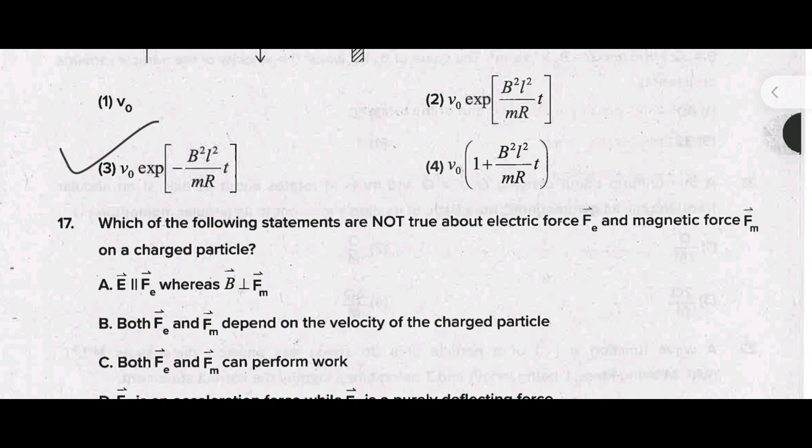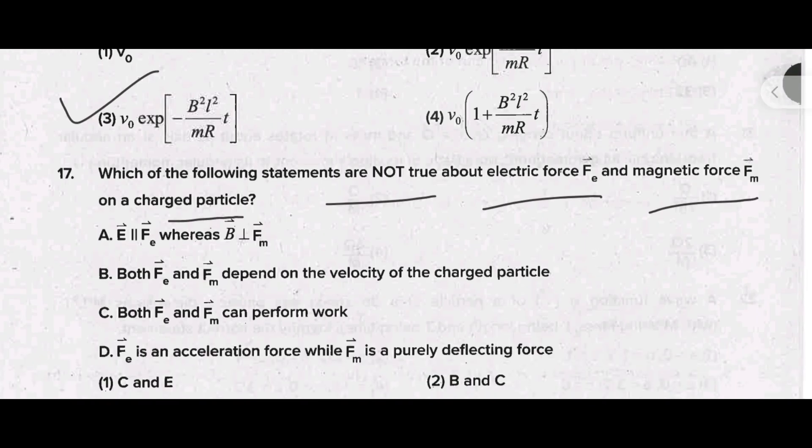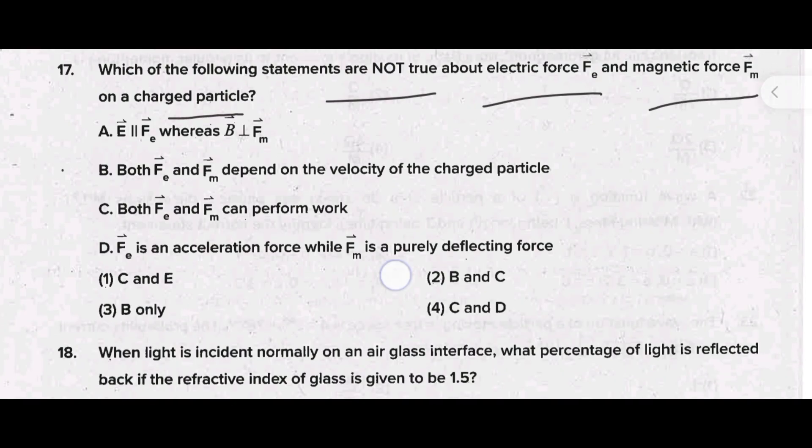Which of the following statements are not true about electric force F_E and magnetic force F_M on a charged particle? Here the correct answer is option 2, that is B and C. Here total 4 statements are given, out of that you have to choose the correct answer - the correct answer is B and C.